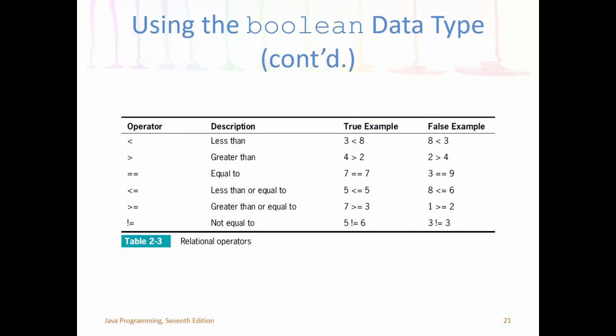Java also has relational operators, common in every language. Notable differences for VB users: `==` (double equals) is for comparison — it tests if something is true. The single `=` is the assignment operator for placing values into variables. `<=` and `>=` are less/greater than or equal to. For not-equal-to, Java uses `!=` — VB uses `<>`, which is very unusual. Most programming languages use `!=`.